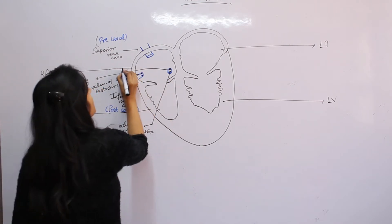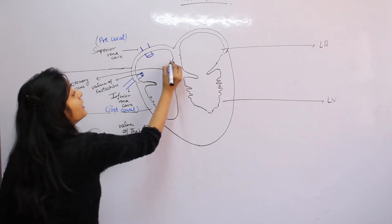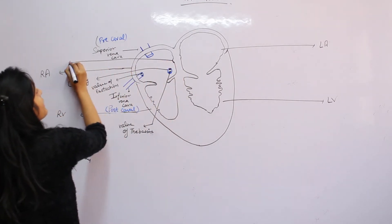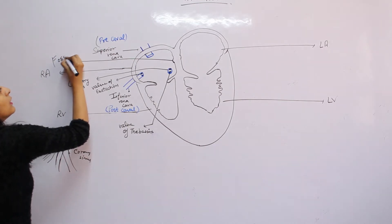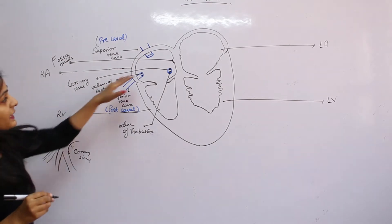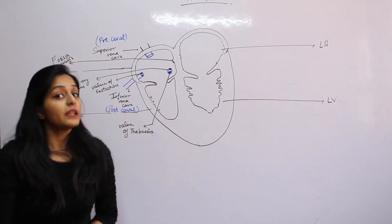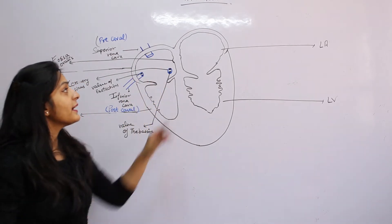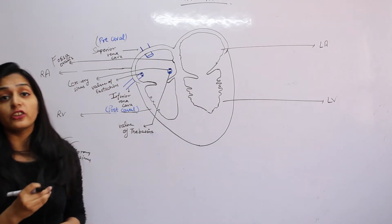One more thing about this: here is a depression and scar which is called Fossa Ovalis. This depression is created in the embryonic stage.